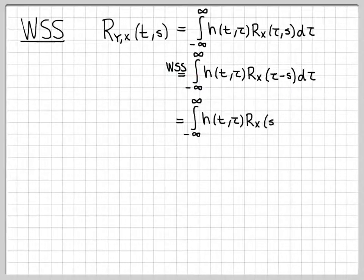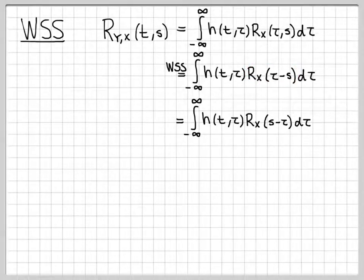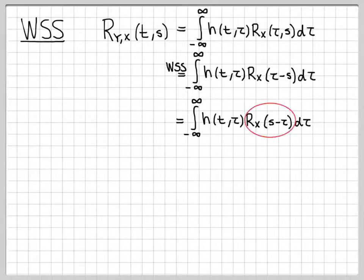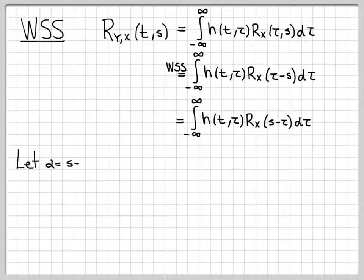I can simplify this a little bit more. We know that the autocorrelation function is always an even function. So r_x at time tau minus s is the exact same value as the autocorrelation function at the negative of this argument. The negative of that argument is s minus tau. So this is just an equivalent way to write this second line using the fact that the autocorrelation function for any random process is always an even function.